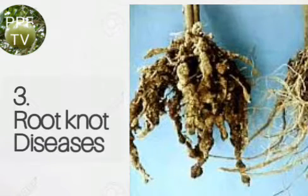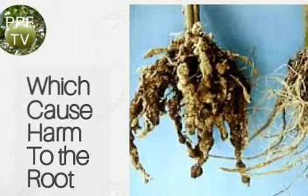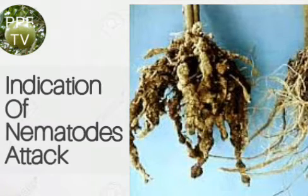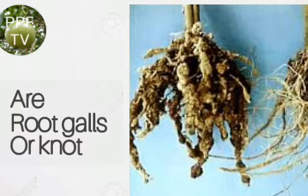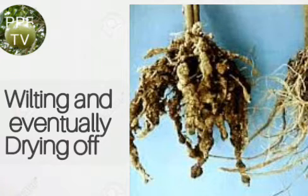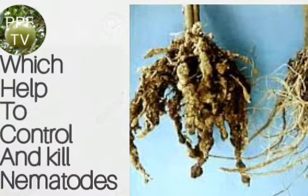Number three, we have nematode disease. This disease is caused by nematodes in the soil which cause harm to the roots of the vine. Indications of nematode attack include root galls, yellowish leaves, stunted growth, wilting, and eventually the vine dies. To prevent infection of other vines, you apply nematicides which help to control and kill those nematodes.